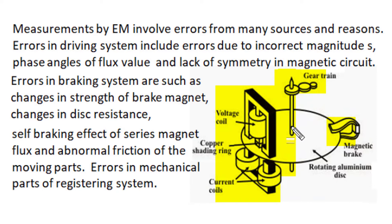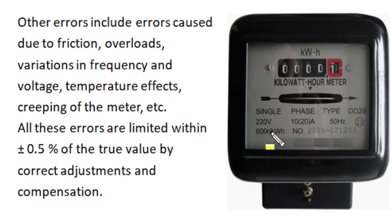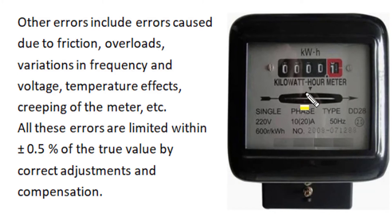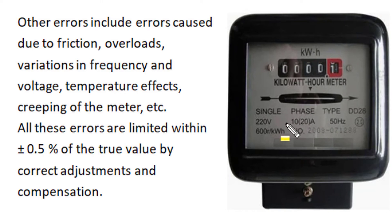Friction in all moving parts is a non-linear parameter and abnormally high friction is a serious concern for accurate energy measurement. Mechanical adjustment and gear trains of the register and counting mechanism can also cause error. The energy meter must work across a wide range of load conditions — sometimes overloaded, often underloaded — with wide variation in operating power factor. Error may be caused by friction, variation in frequency, voltage, temperature, and overload. Correct adjustment is required to maintain accuracy within ±0.5 percent.